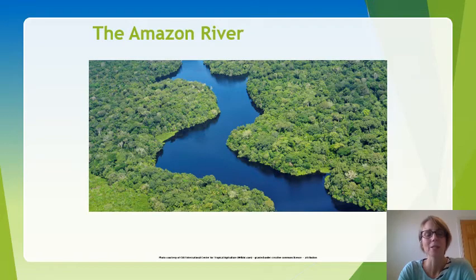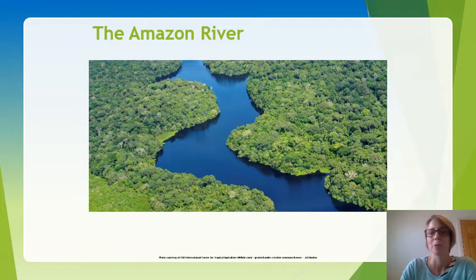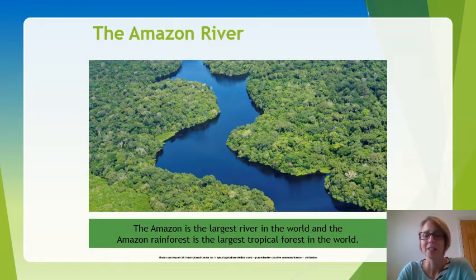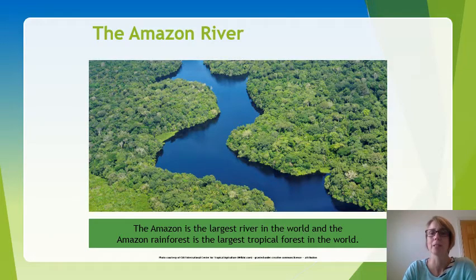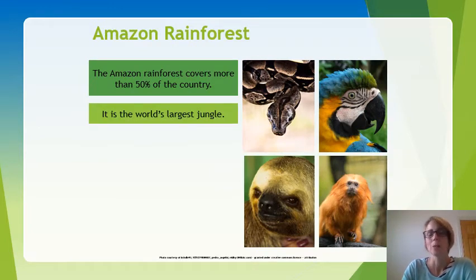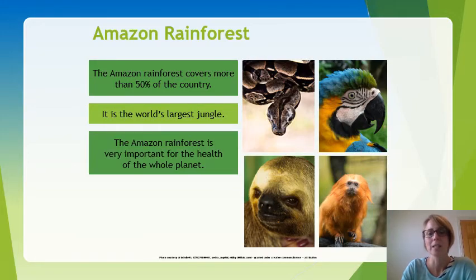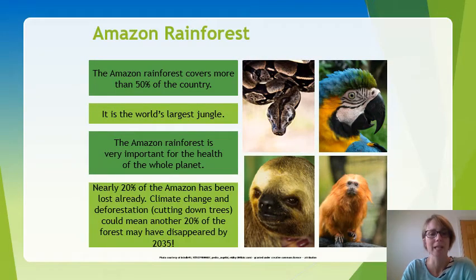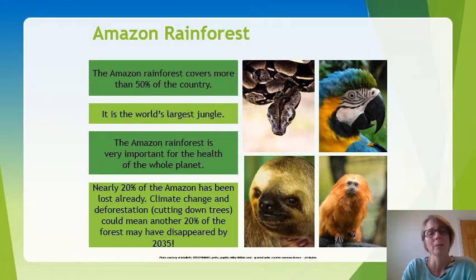The Amazon is the largest river in the world, and the Amazon rainforest is the largest tropical rainforest in the world. It covers more than 50 percent of Brazil — it's the world's largest jungle and very important for the health of the planet. Twenty percent of the Amazon has already been lost, and climate change and deforestation could mean another 20 percent of the forest may disappear by 2035. Pause the video and make brief notes about the Amazon rainforest.